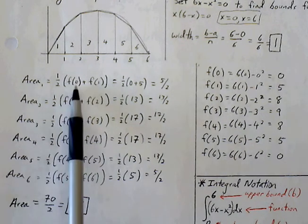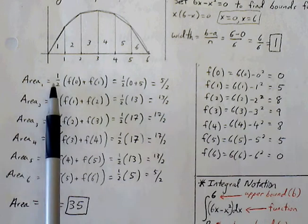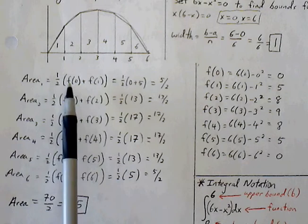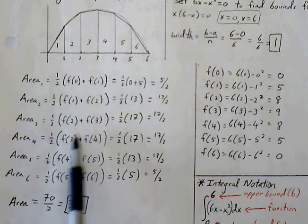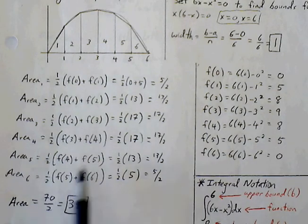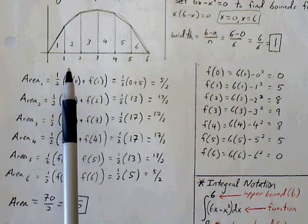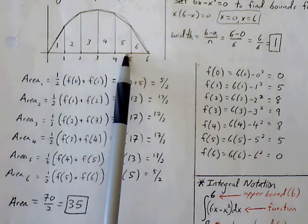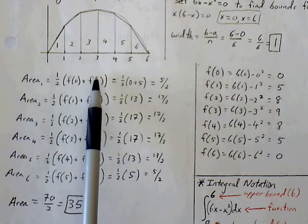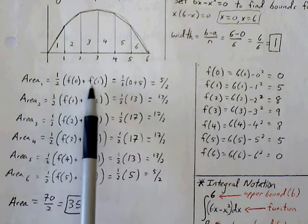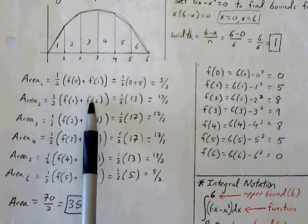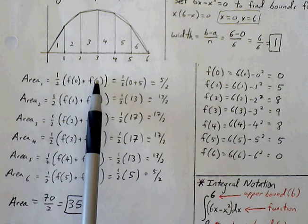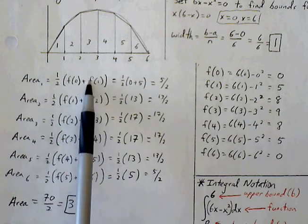There's actually a shorthand way of writing this. Because the widths are all the same in this instance, look at the pattern. The pattern is, if we add up all these areas, what portions get repeated? Every interval from 1 to 5 gets repeated because, see that? Area 1, area 2, they both share f of 1. All these intervals, all these regions share one common height.